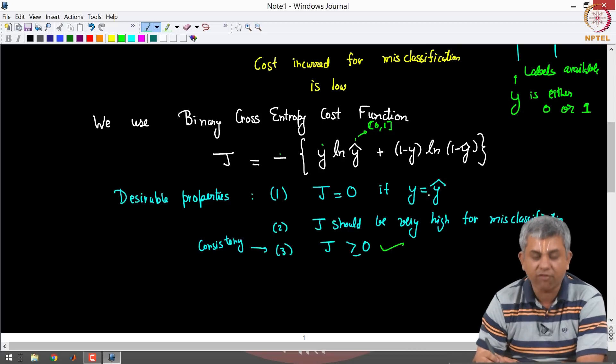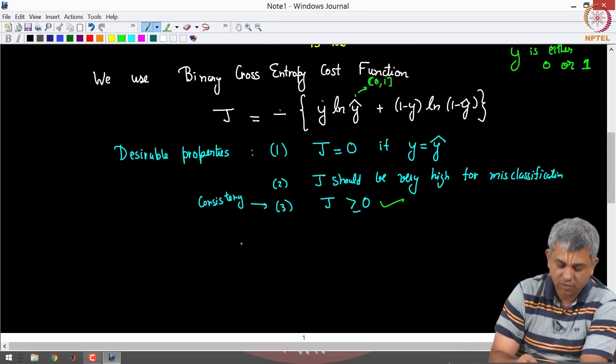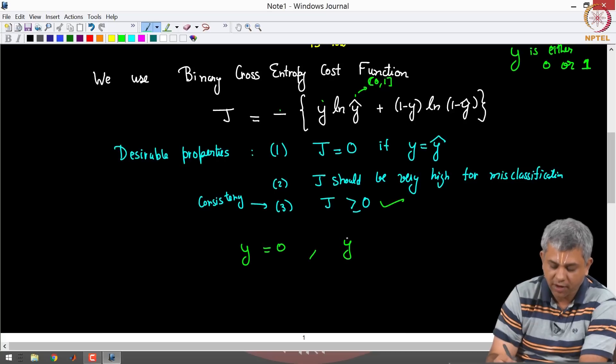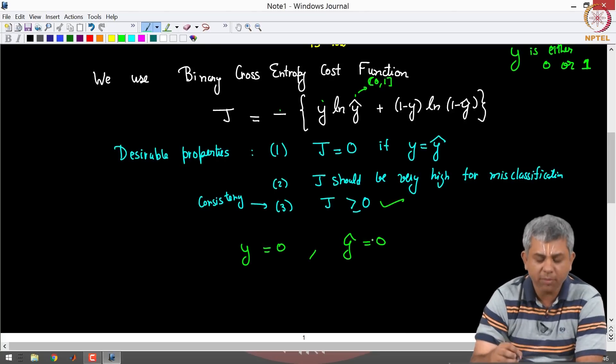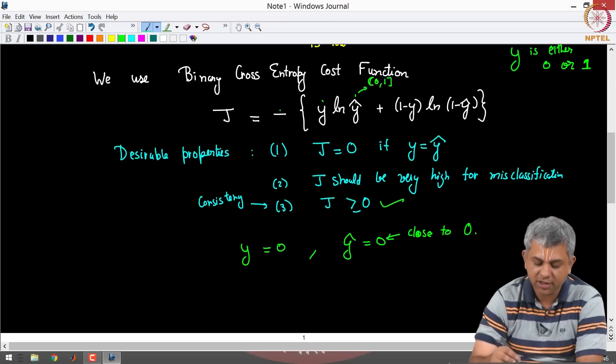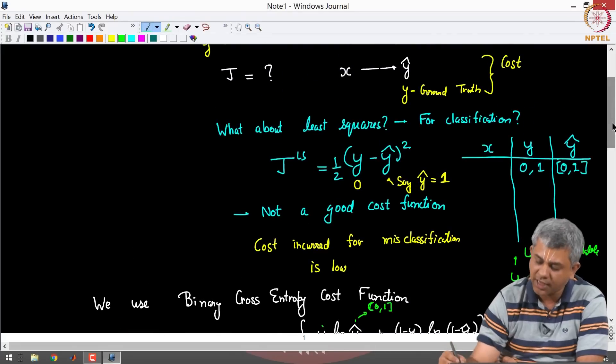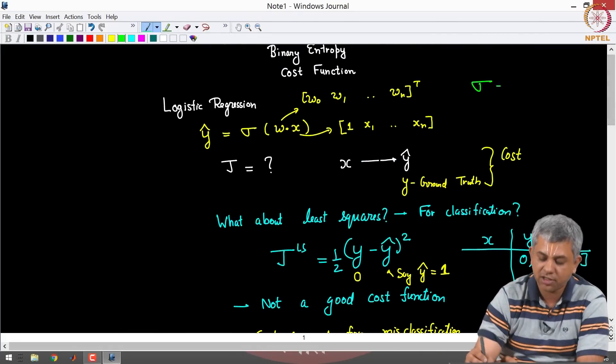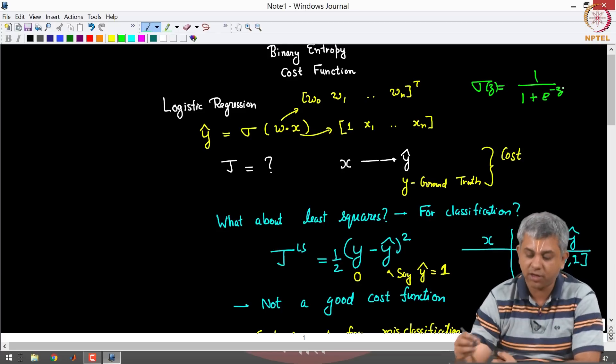Now let us see, is J equal to 0 if Y equal to Y hat. So let us take a few cases. Y is 0 and Y hat is 0. Now the moment Y is 0 and Y hat is 0 or close to 0, I will keep it close to 0 just to avoid the singularity at exactly 0. Why am I keeping it close to 0? Because sigmoid is actually never going to give you exactly 0. Remember sigmoid is 1 plus, or sigmoid of Z is 1 by 1 plus e to the power minus Z.